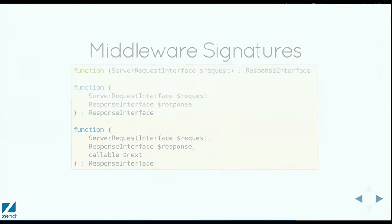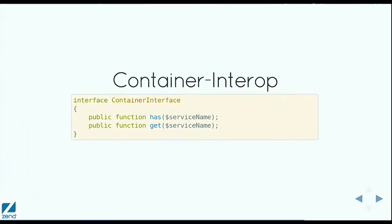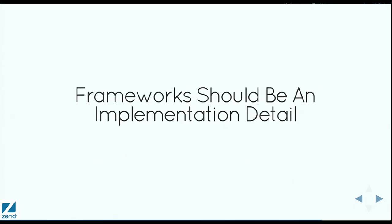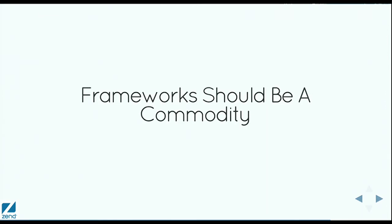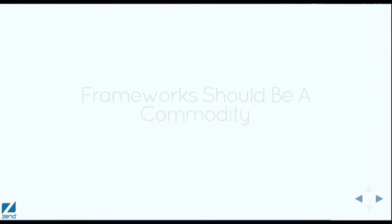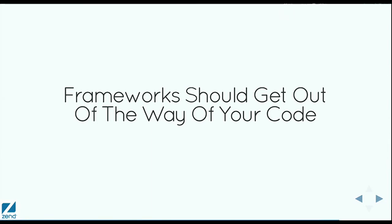The next place the community is going is even more of these shared interfaces, and one of these is container interop. This is the container interface — it's just has and get. When we start getting lots of these plumbing interfaces and abstractions out there, what's the point of a framework? My takeaways from this are that really, frameworks are an implementation detail and should be an implementation detail. Quite often you're going to be developing the framework from commodity components. So the framework is really just a commodity — I want to be able to swap it out at any point based on perceived value. The framework should get out of the way of your code so that you can focus on what you're trying to deliver.